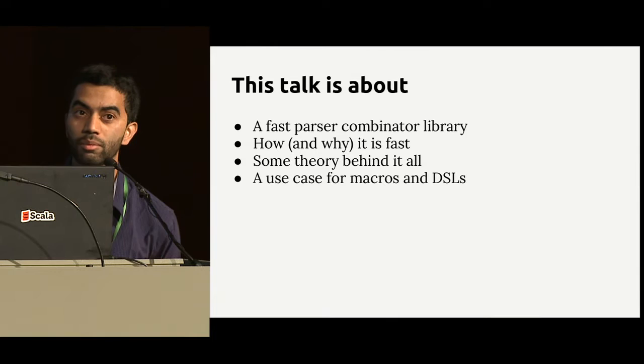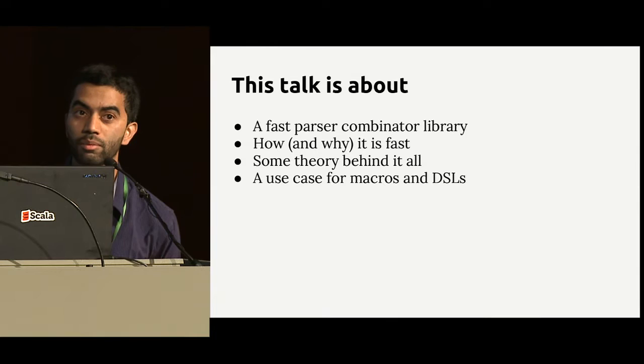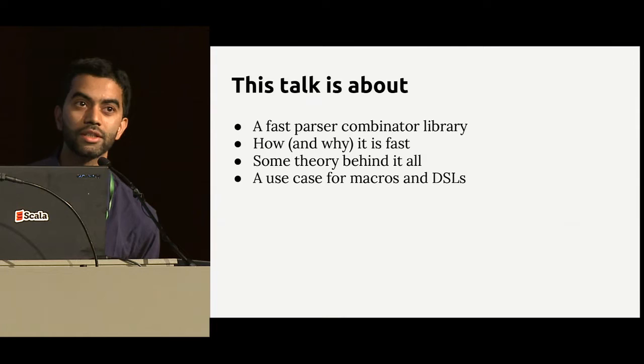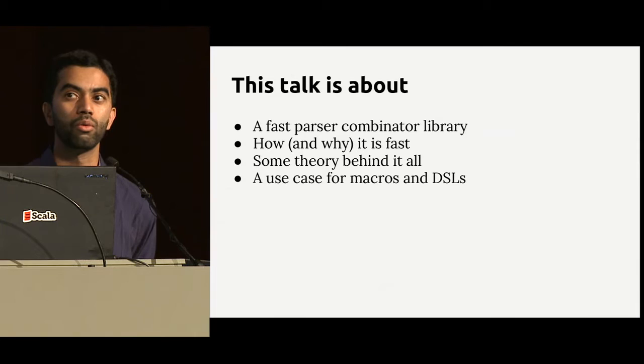This talk is about a fast parser combinator library — how and why it is fast, some theory behind it all, and at the end a little use case for macros and DSL. I will try to show how we use macros to implement optimizing DSLs.